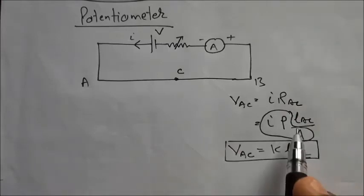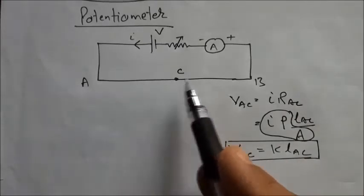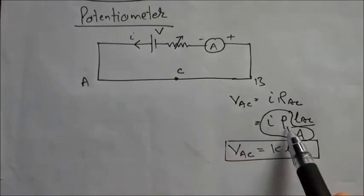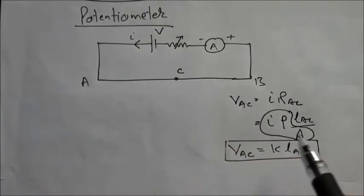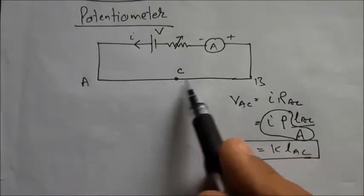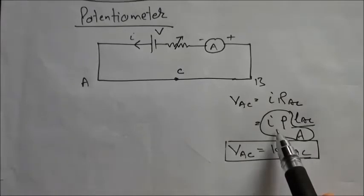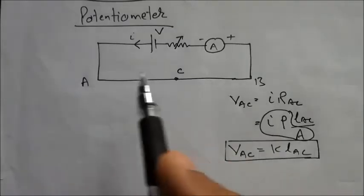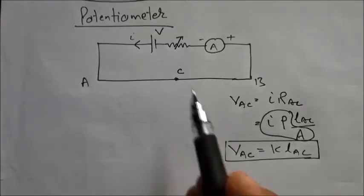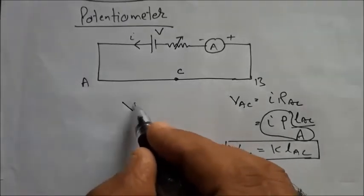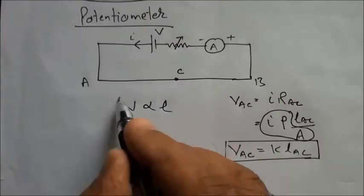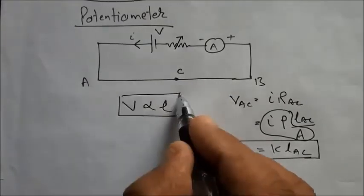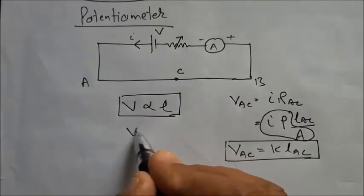How do we state this principle? There is a wire of one material with no change in material, with uniform cross-section throughout, and a constant current is flowing through it. So for constant current flowing through a wire of uniform cross-sectional area, V is proportional to L. This is the principle of potentiometer.